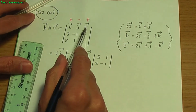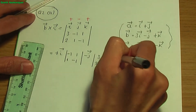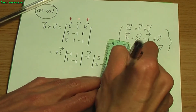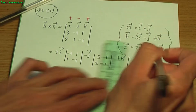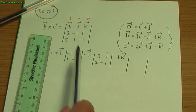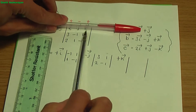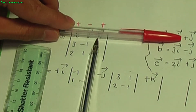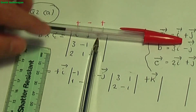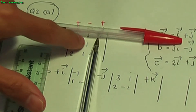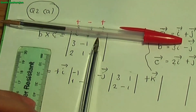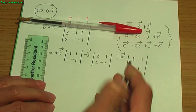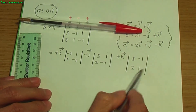And plus k multiplied by another 2 by 2 determinant, where the elements are found by ignoring the row and column associated with k, giving 3, minus 1, 2, 1.